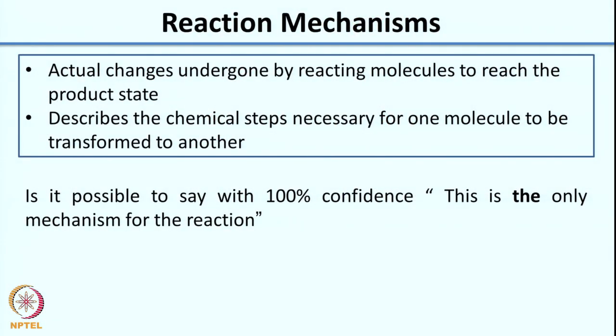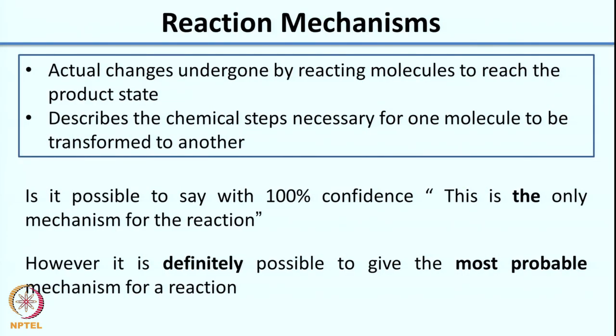Essentially, if you think of going from destination A to destination B, reaction mechanism is something similar — your two destinations are your reactant and your product, and the road is your reaction mechanism. Now, is it possible to say with 100% confidence that this is the only mechanism for a given reaction? You can propose a most probable mechanism, but you cannot say with 100% confidence that it is the only one, just as there may be multiple roads from A to B.